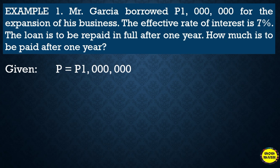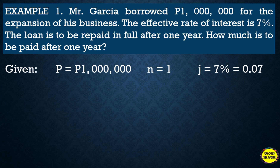Seven percent is j, the interest rate in a conversion period, and n is one — one year. We need to convert seven percent into decimal, so j = 0.07.